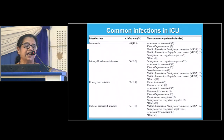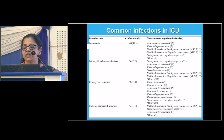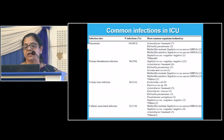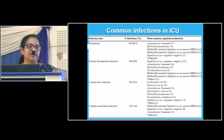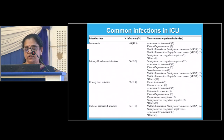Common infections in ICU: pneumonia caused by Acinetobacter baumannii, Klebsiella pneumoniae, MRSA; primary bloodstream infections by MRSA and Acinetobacter. The ESKAPE organisms are: E for Enterococcus, S for Staphylococcus, K for Klebsiella pneumoniae, A for Acinetobacter, P for Pseudomonas, and E for Enterobacter species. The 3H's are HIV, Hepatitis B, and Hepatitis C. The 3C's are SARS-CoV-2, Clostridium difficile causing pseudomembranous colitis due to prolonged antibiotics, and Candida infections.